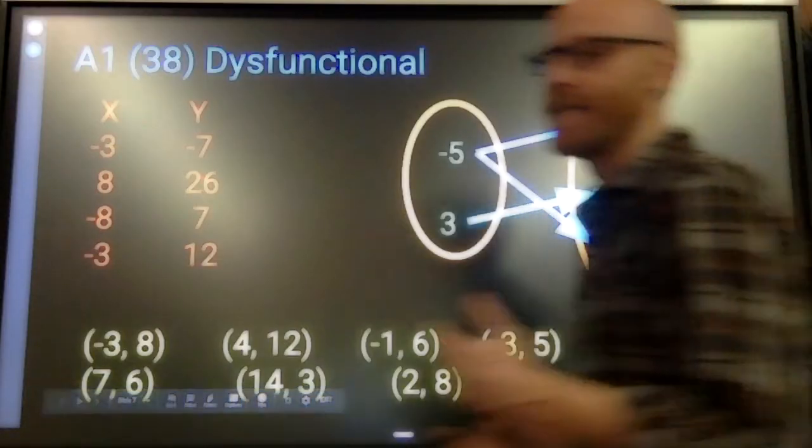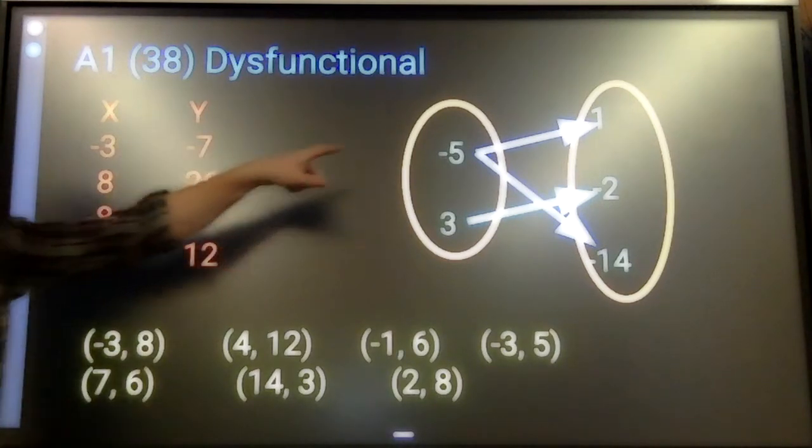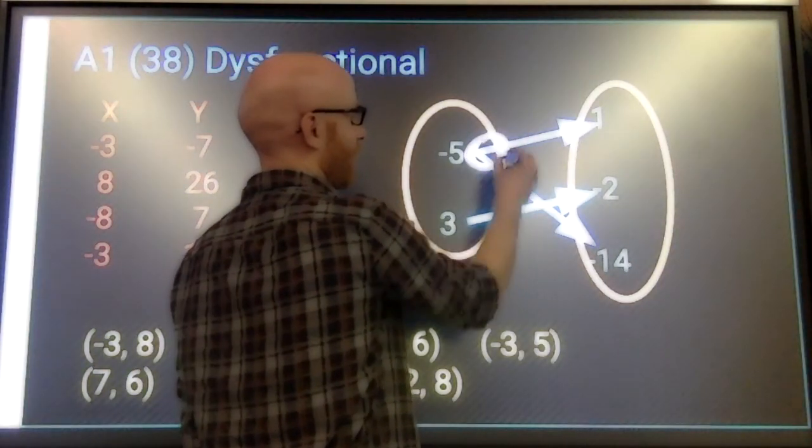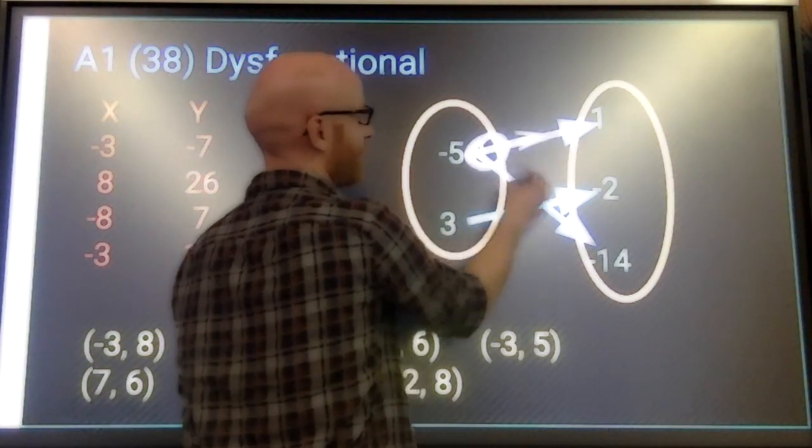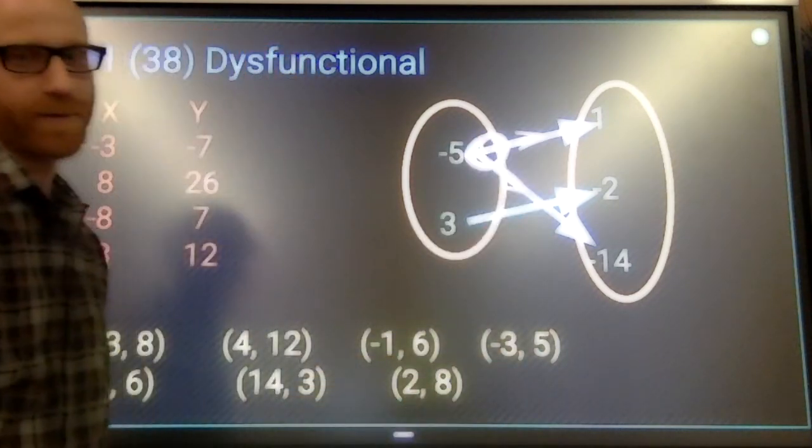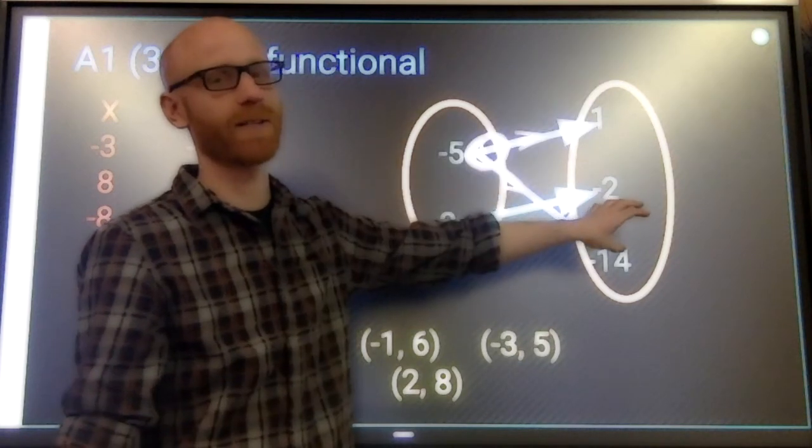Here's three other examples of dysfunction in three of our other contexts. Easy to tell in a mapping. If you have this situation going on, two arrows leaving from the same input, you're dysfunctional. When I input negative 5, sometimes it equals 1, sometimes it equals negative 2. That's not a functional situation.